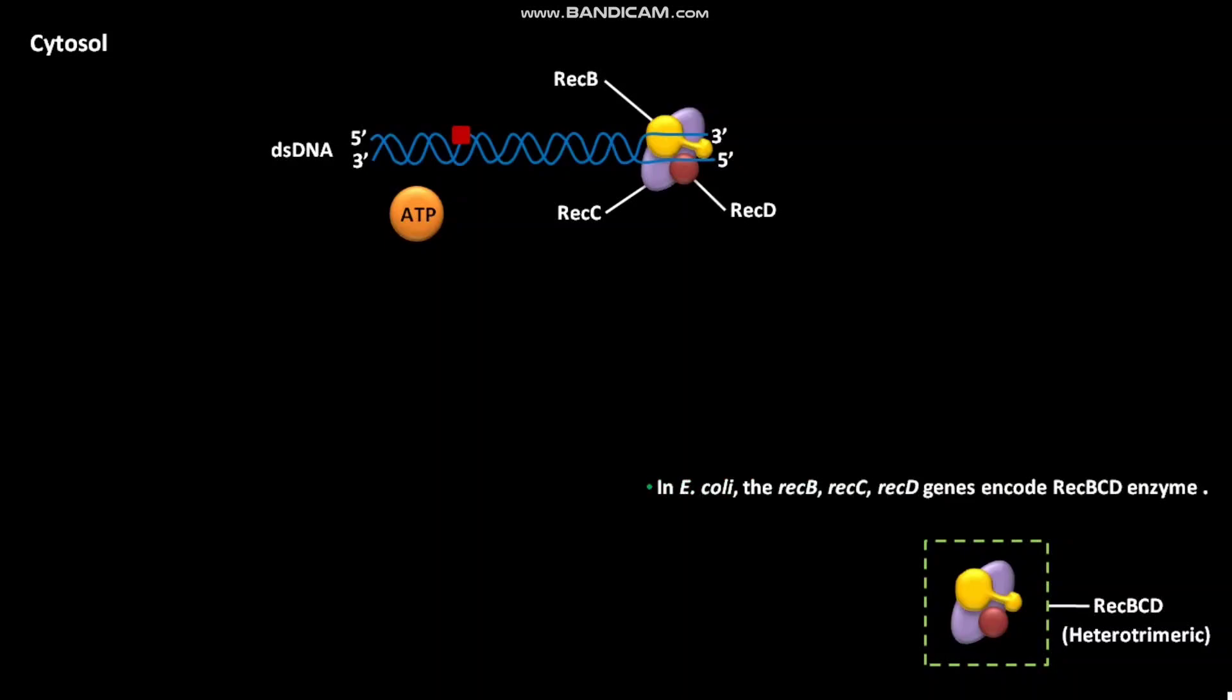In E. coli, the REC-B, REC-C, REC-D genes encode REC-BCD enzyme. The REC-B subunit and REC-D subunit show helicase activity.